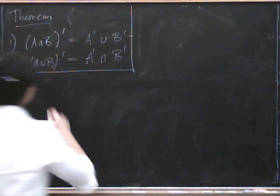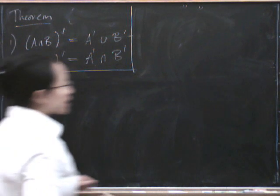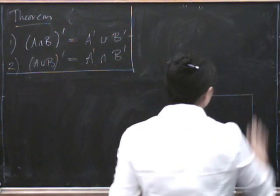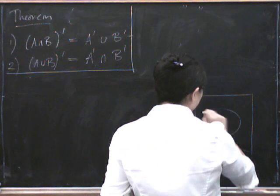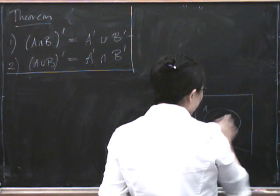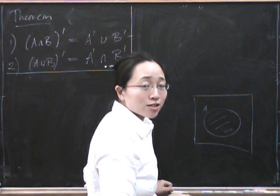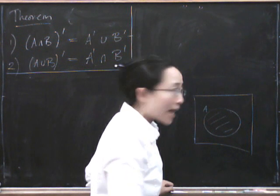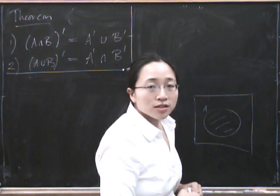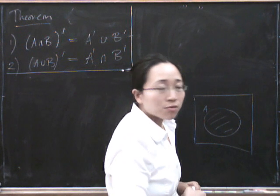Now look, if you think of complement as being negation, because inside A is all those elements that DO satisfy the property A, the complement of A is then all those things that don't satisfy the property A.